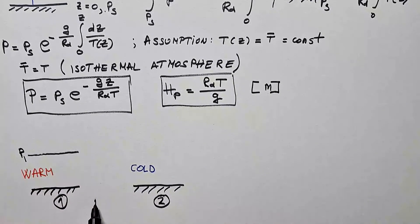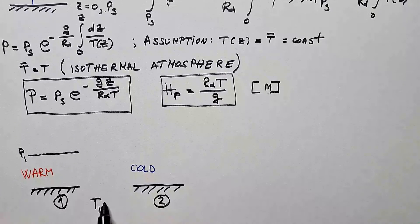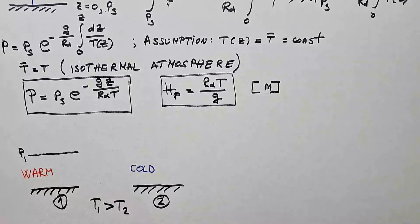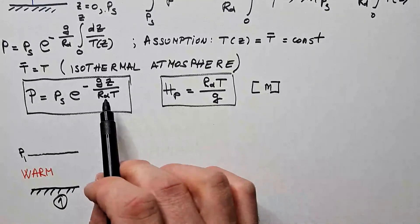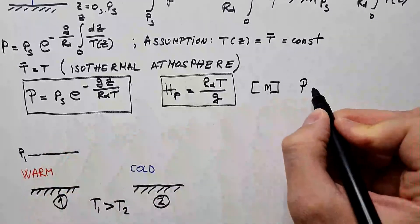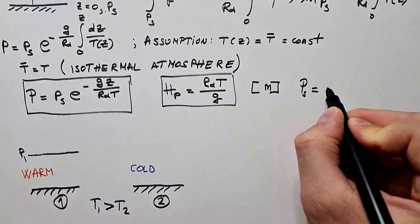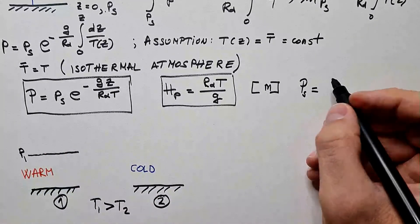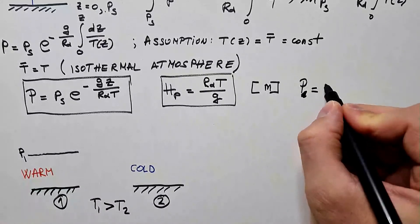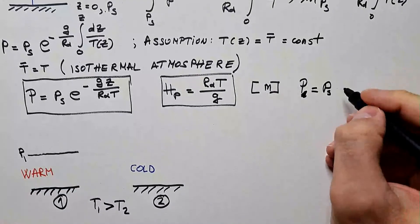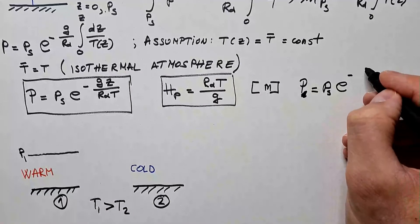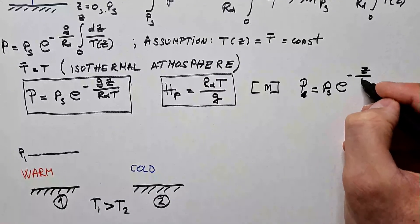Well, this means that T1 is larger than T2, because this is warmer air than this one. Let me just, for convenience, combine these two to rewrite this equation as p equals ps e to minus z over hp.